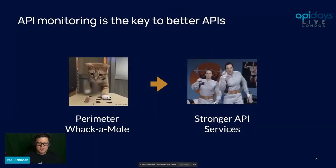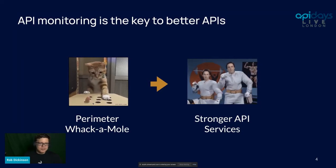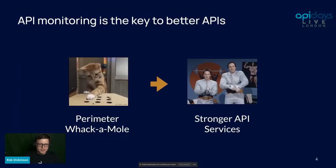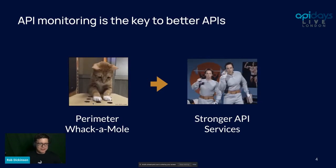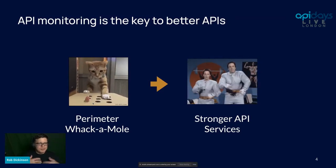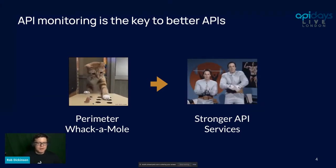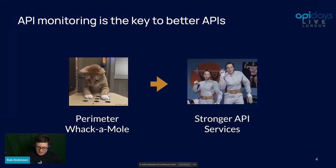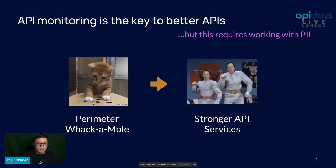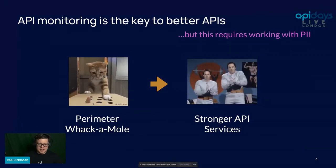Why is PII so important? At Resurface, we really believe that API monitoring is the key to better APIs — not just for quality but also for security. We're desperate to help the market break out of the perimeter whack-a-mole mode and apply what we know about customers and activity on our APIs to build stronger, more resilient systems. But there's a catch: to do this well, we have to work with PII. If we really want to understand what our customers are doing, we need customer data — that's a key component.